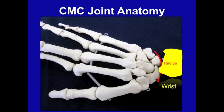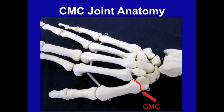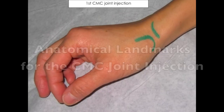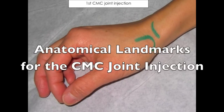CMC joint injection is not to be confused with the true wrist injection, which is placed between the radius and the carpal bones. Once pain is located to the base of the thumb, take care to differentiate CMC joint pain from tenderness at the slightly more proximal anatomical snuff box, where pain might indicate scaphoid trauma, or tenderness along the first dorsal compartment tendons — tenderness over the abductor pollicis longus and extensor pollicis brevis tendons may indicate De Quervain's tenosynovitis.